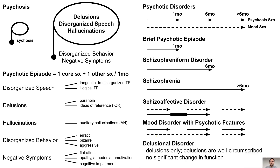Finally, delusional disorder includes only delusions — none of the other symptoms of psychosis. The delusions are usually well circumscribed, meaning that they relate to only one aspect of the patient's life, for example a delusional belief that the FBI is repeatedly hacking their phone. However, the delusions do not cause any significant change in function.